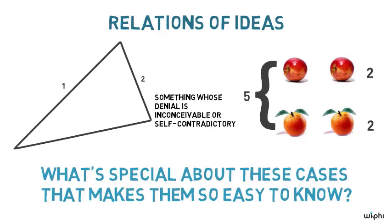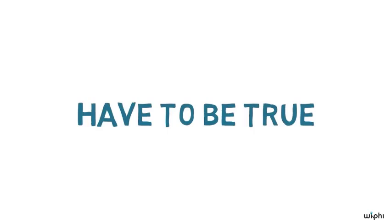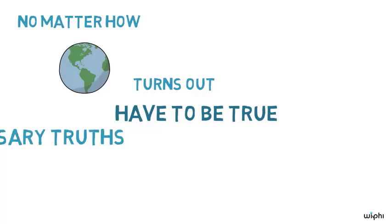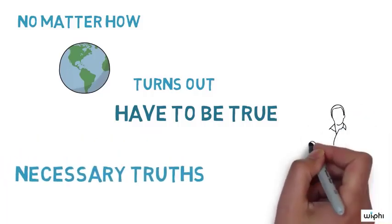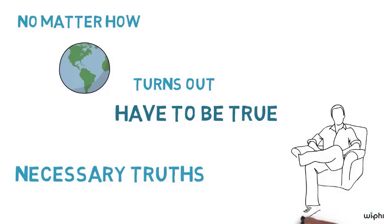Here's another way of getting at the same idea. Relations of ideas have to be true, no matter how the world turns out. They're necessary truths. So what does it take to know claims like this? What does it take to know relations of ideas?